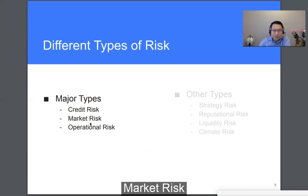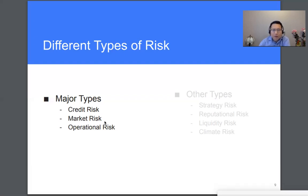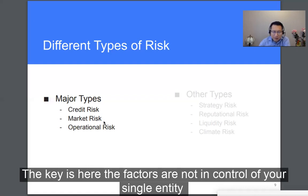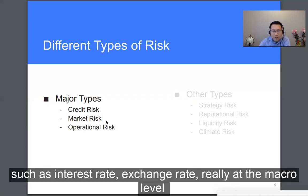Market risk. Market risk refers to the probability of loss resulting from some factors affecting the broad financial market. The key here is that the factors are not in control of any single entity. It's at the financial market level, such as interest rate, exchange rate — really at the macro level. So that's market risk.